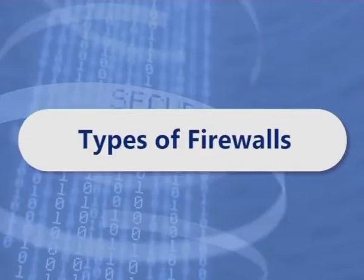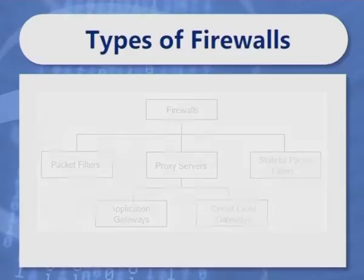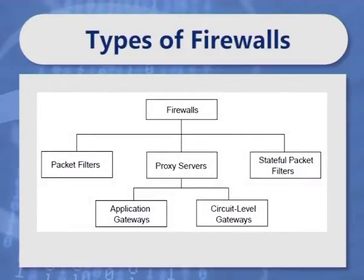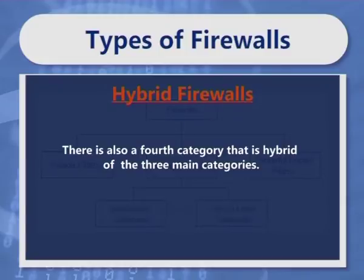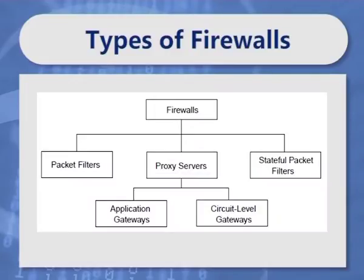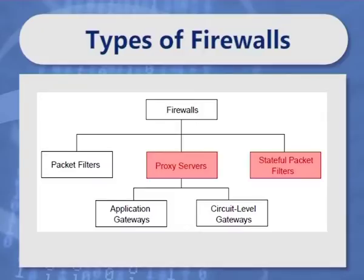Let us see different types of firewalls. Firewalls can be classified into three basic categories: packet filters, proxy servers — which include application gateways and circuit level gateways — and stateful packet filters. There is also a fourth category that is a hybrid of the three main categories. For example, a firewall may be a combination of the application gateway and packet filter, or a proxy server and a stateful packet filter. The figure illustrates the different types of firewalls.